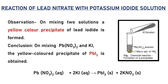Activity: reaction of lead nitrate with potassium iodide solution. When we mix lead nitrate with potassium iodide, the observation is that a yellow color precipitate of lead iodide is obtained. Chemical equation: Pb(NO₃)₂ + 2KI → PbI₂ + 2KNO₃.